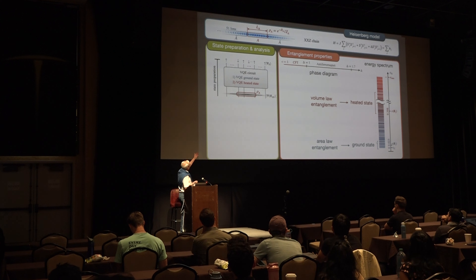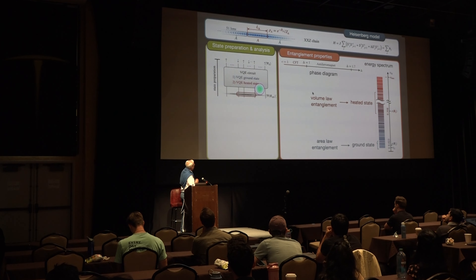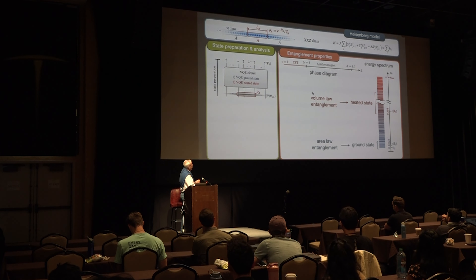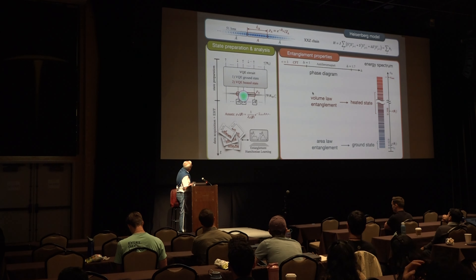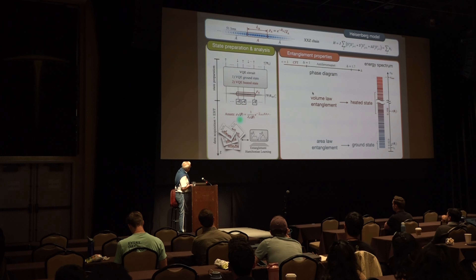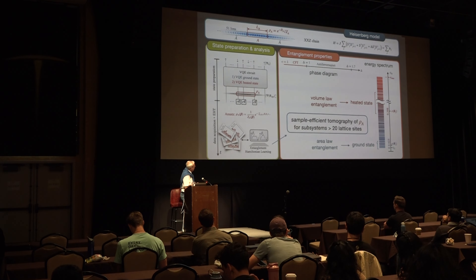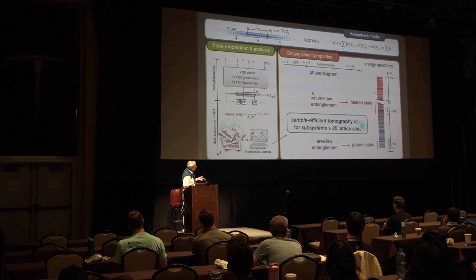This part we already did — we have state preparation and analysis. We can prepare the ground state and also heated states. We prepare heated states in a very primitive way, just applying the cooling circuit once again but before you scramble up. No attempt here to produce a single excited state — we just want something a little bit up there, like a microcanonical ensemble. Then we run our protocol: taking data for the subsystem, and at the end we get the entanglement Hamiltonian from this data by classical post-processing.